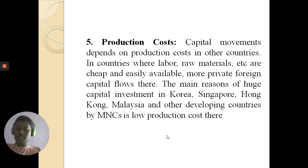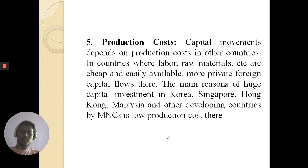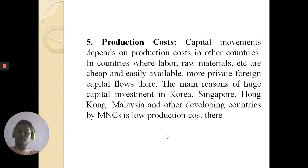The fifth factor is production cost. Production cost significantly affects international capital movement. Capital flows to countries where labour, raw materials, and other factors are cheap and easily available. Investors prefer to invest where production costs are lower. For example, the main reason for huge capital investment by multinational corporations in Korea, Singapore, Hong Kong, Malaysia, and other developing countries is the low production cost in those countries.